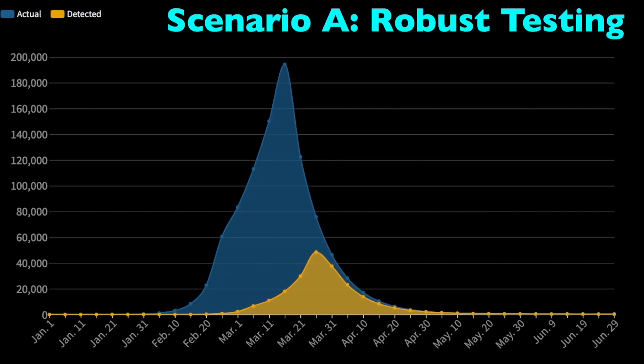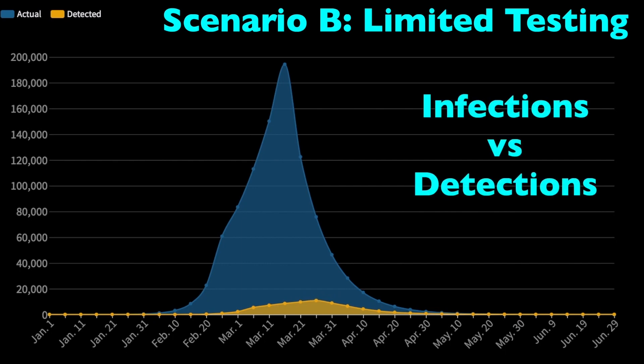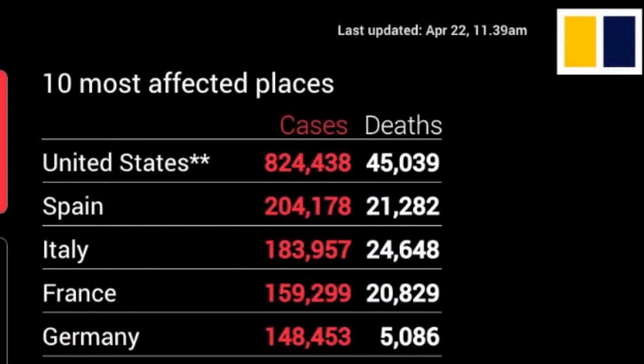How about in scenario B where the testing rollout is a lot more limited? You see that the actual number of infections don't change at all because we didn't change any underlying assumptions except for testing. The peak for the number of cases being reported only reached around 11,000 in a single period, which is around one-fifth of what would have been registered under scenario A where the peak was around 50,000. You really can't just look at the case numbers without considering all the subtlety around testing involved. That's why comparing case numbers between different countries is largely a meaningless exercise, because all these countries deploy tests very differently.